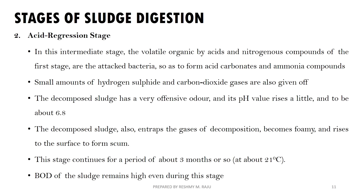The next stage is acid regression — an intermediate stage. Here we have volatile organic acids and nitrogenous compounds. Bacteria convert amino acids and carbonates, then convert ammonia compounds and carbon dioxide. An offensive odor is formed, and pH rises to about 6.8. Foamy rising of the sludge occurs. The population doubling time is about two weeks.